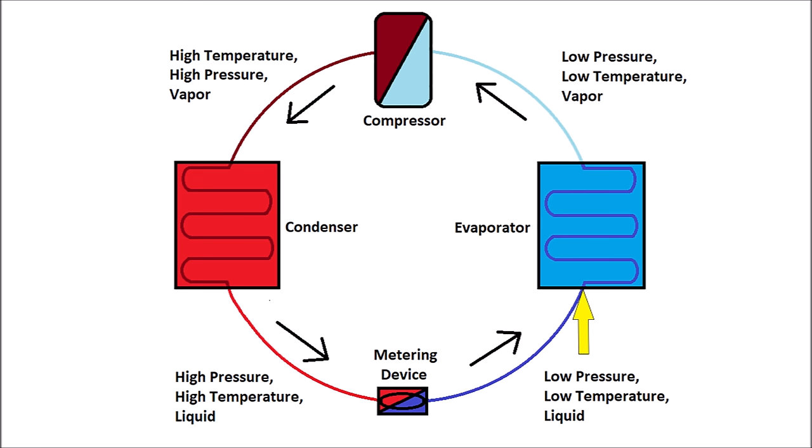Then the refrigerant enters the evaporator as a low pressure, low temperature liquid refrigerant. It absorbs heat energy while it's changing in state, and then it turns into a low pressure, low temperature vapor.